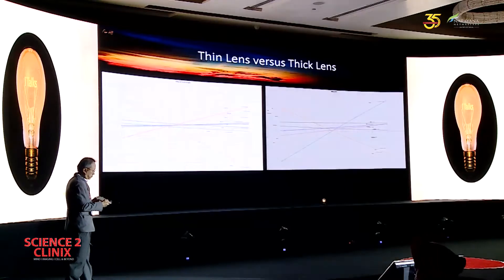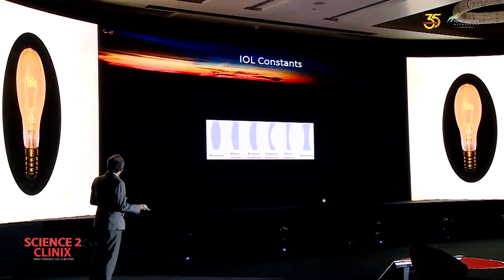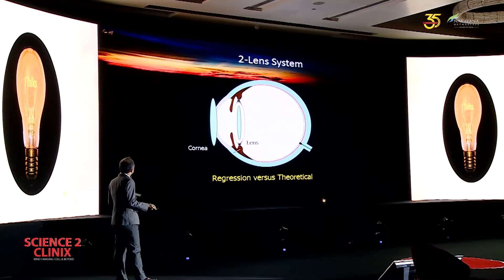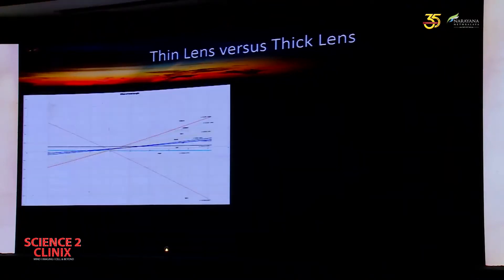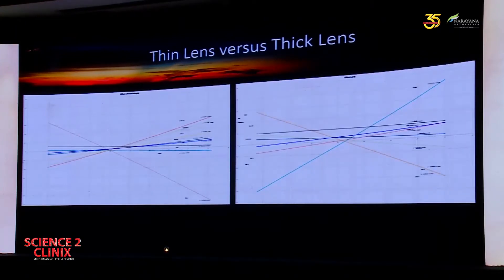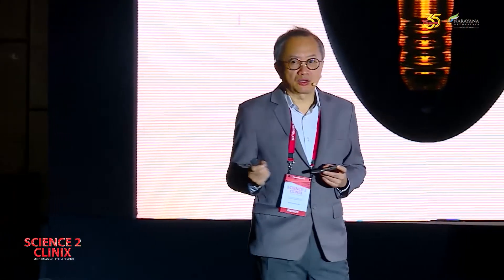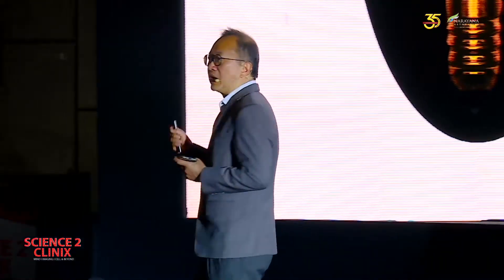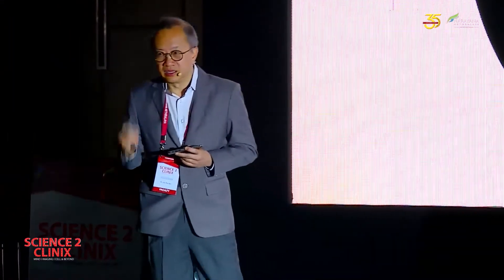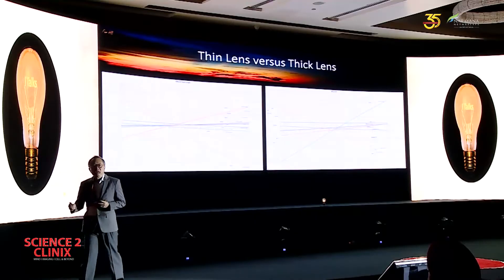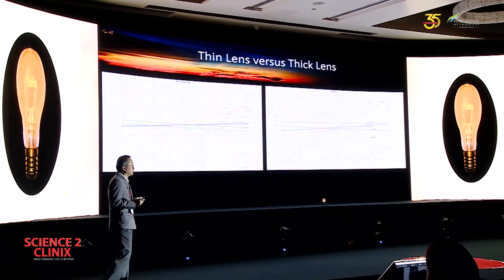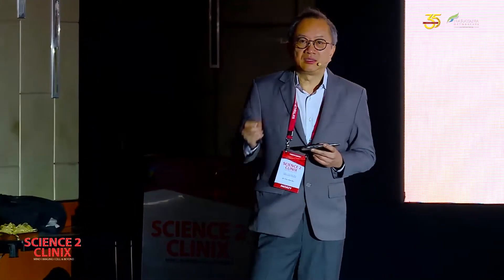We look at thin lens versus thick lens. In the past, for simplicity, all our power calculation was based on thin lens. We assumed the lens is just a single plane and ignored everything else — even the corneal thickness, assuming it is a single plane. For the IOL, we disregarded the front curvature, the posterior curvature, and the thickness, assuming it is a single plane. That was fine because in the past we didn't have the computational power. A simple equation for the thin lens is easy and works very well for most — normal — axial lengths.